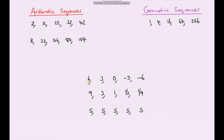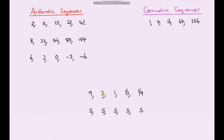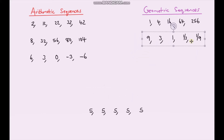For the next sequence, to go from six to three I can subtract three. Three subtract three is zero, zero subtract three is negative three, subtract three again gives negative six — so that's arithmetic. Now to go from nine to three: I could subtract six, but that's not going to work consistently, so I'm going to divide by three. Divide by three gives me one, divide by three again, divide by three again. So that's geometric, because I'm dividing by the same amount each time — or multiplying by one third.